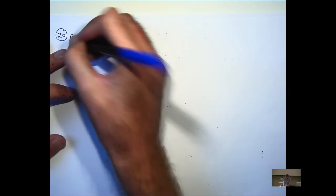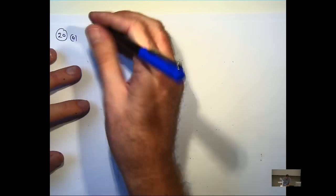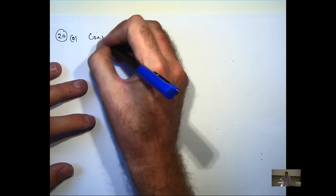Okay, find the unit tangent vector at t equals π/4 to the curve r of t, so here's our vector function.